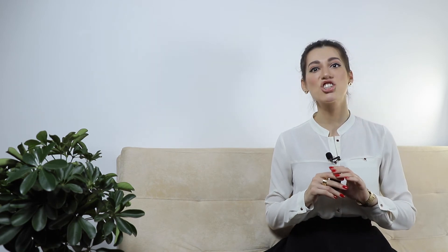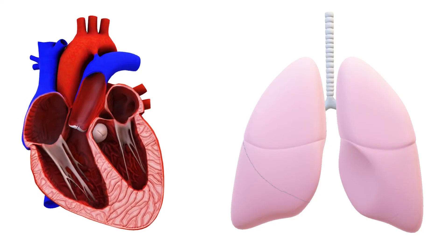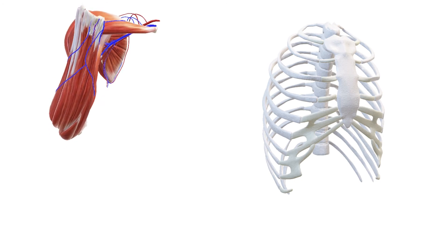Childhood obesity has been called one of the most serious public health challenges of the 21st century, and with good reason. Obesity can harm nearly every system in a child's body — heart and lungs, muscles and bones, kidneys and digestive tract — as well as the hormones that control blood sugar and puberty, and can also take a heavy social and emotional toll. Youth who are overweight or obese have substantially higher odds of remaining overweight or obese into adulthood, increasing their risk of disease and disability later in life.